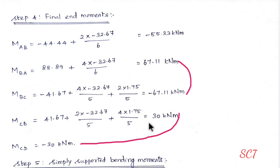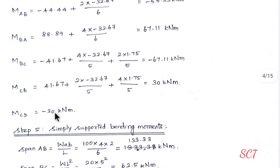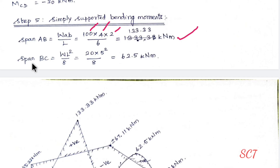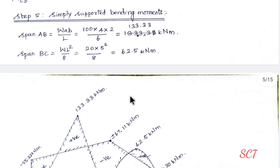For the simply supported bending moment diagram, find the maximum bending moment for each span. For Span AB with a point load, the formula is W·a·b / L. Substituting W = 100 kN, a = 4, b = 2, gives 133.33 kNm. For Span BC, substituting gives 62.5 kNm.